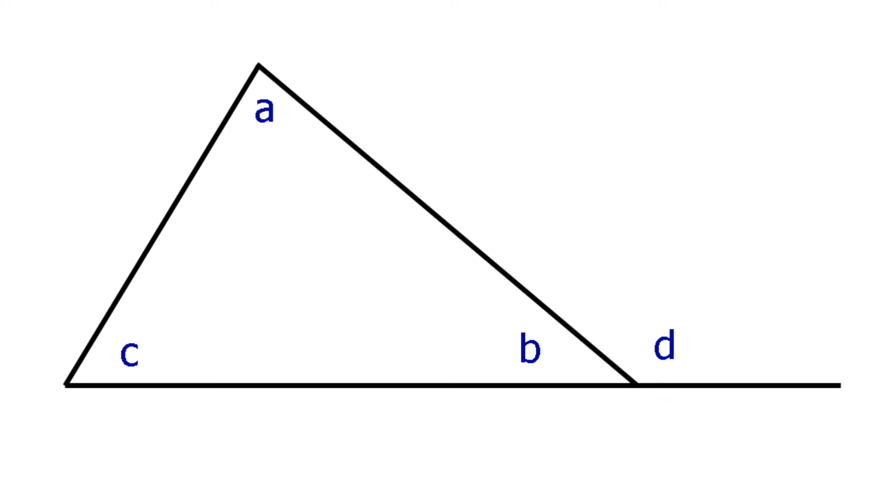An external angle is the name given to an angle that appears when we extend or produce one side of a triangle in one direction. In the diagram, we have the different values of A, B, and C of the internal angles and D the value of the external angle. Now, I could just tell you that the value of D equals the value of A plus C. But where's the fun in that? Let's push the boat out and prove it.